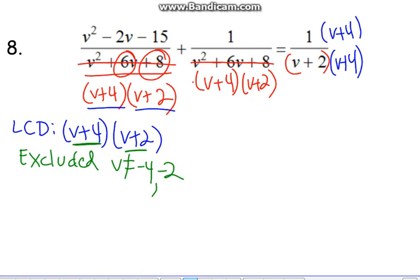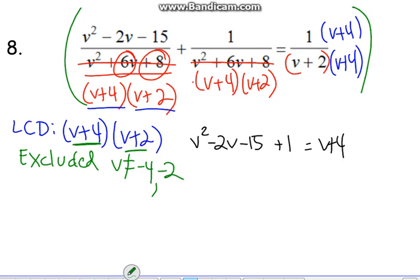So I'm going to rewrite real quick. V squared minus 2v minus 15 plus 1 equals 1 times v plus 4 is v plus 4. Notice I haven't even written my denominators yet. Why? Because what's the next step? After we have common denominators, get rid of them.